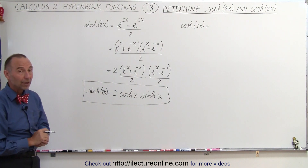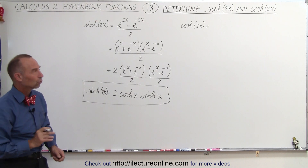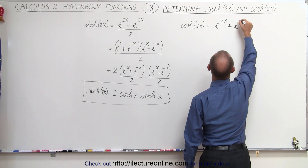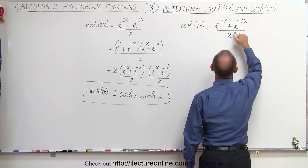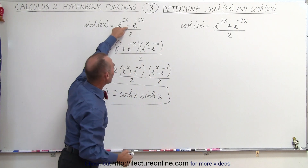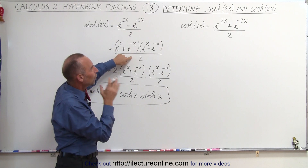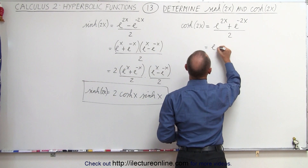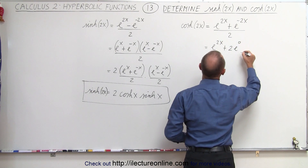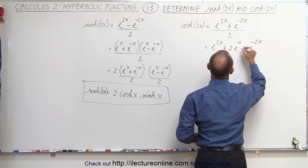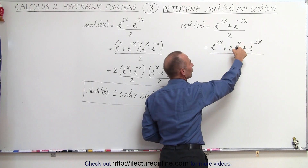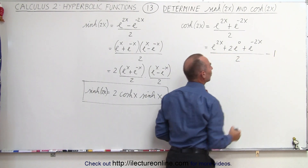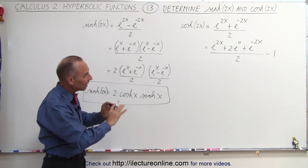Now let's see what we can come up with for the hyperbolic cosine of 2x. That one is a little bit more tricky. We can expand it again to write e to the 2x plus e to the minus 2x divided by 2. Because of the plus sign here instead of the minus, we cannot factor it the same way. So what we need to do is add another term and then subtract that same term — we can write this as e to the 2x plus 2e to the 0 plus e to the minus 2x, all divided by 2, and since e to the 0 equals 1, that's 2 divided by 2. Since we added a 1, we also subtract a 1.